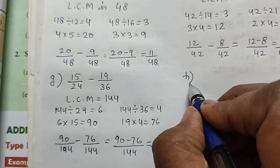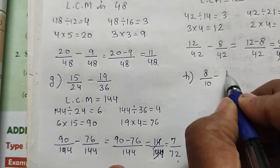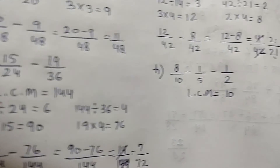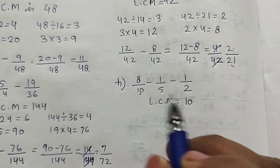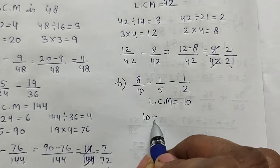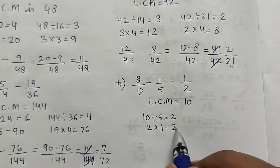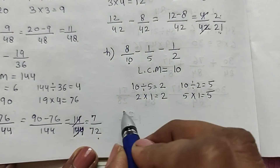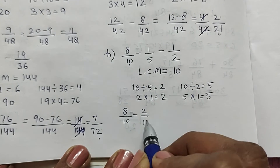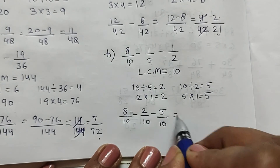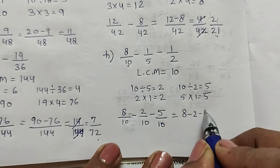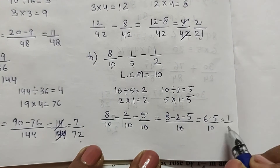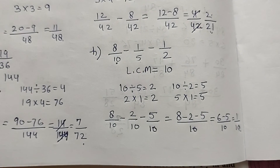Part h: 8/10 minus 1/5 minus 1/2. The LCM is 10. So 8 minus 2 minus 5 over 10 equals 6 minus 5 over 10, which equals 1/10. So 1/10 is the answer. We have now completed self practice 7b.